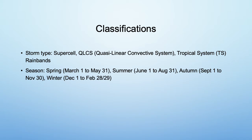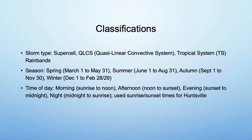Then I classified them by season, and I used meteorological seasons, which start on the first of the month instead of the equinox. Next, I recorded the time of day when each tornado started. Morning is sunrise to noon, afternoon is noon to sunset, evening is sunset to midnight, and night is midnight to sunrise. I used sunrise and sunset times for Huntsville since it is in the middle of the domain.